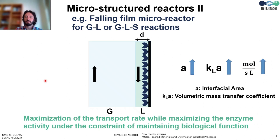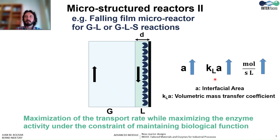One more evolution of the microfluidic reactors will be the one that tries to solve the challenge of operating gas-liquid or gas-liquid-solid reactions. In this example, you have a gas-liquid-solid reactor where the enzyme is immobilized on the internal surface of the tube, and we have a miniaturization of the diameter of this channel. The miniaturization will be associated with an increase of the specific area, so an increase of the volumetric activity of the enzyme and a decrease of the diffusion distances, enhancing the transport rate through the liquid. In this case, as we increase the specific area, we also increase the volumetric mass transfer coefficient from the gas to the liquid, while satisfying a high reaction rate and accelerating the transport rate.